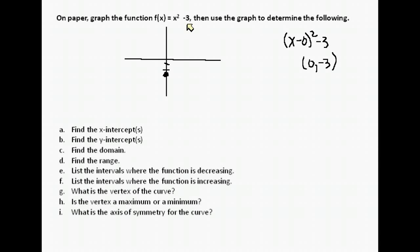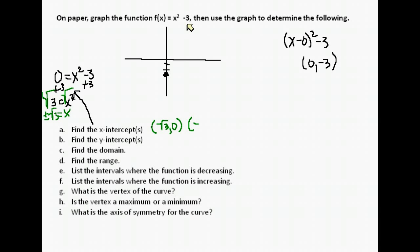To find the x-intercepts — the zeros of our function — we set 0 = x² - 3 and solve for x. Adding 3 to both sides gives 3 = x². To get rid of the x squared, we take the square root of both sides, and always put plus or minus in front. So our x values are plus or minus the square root of 3.